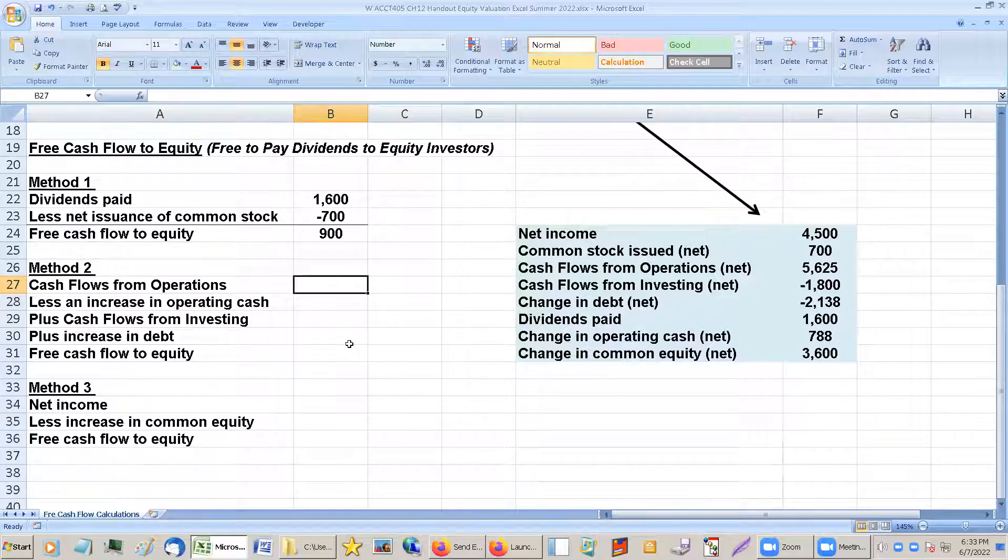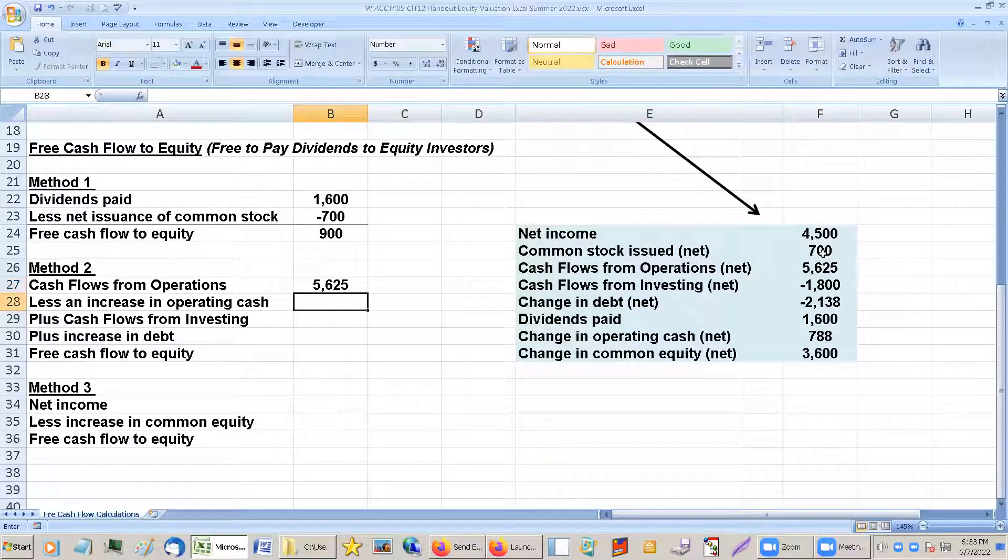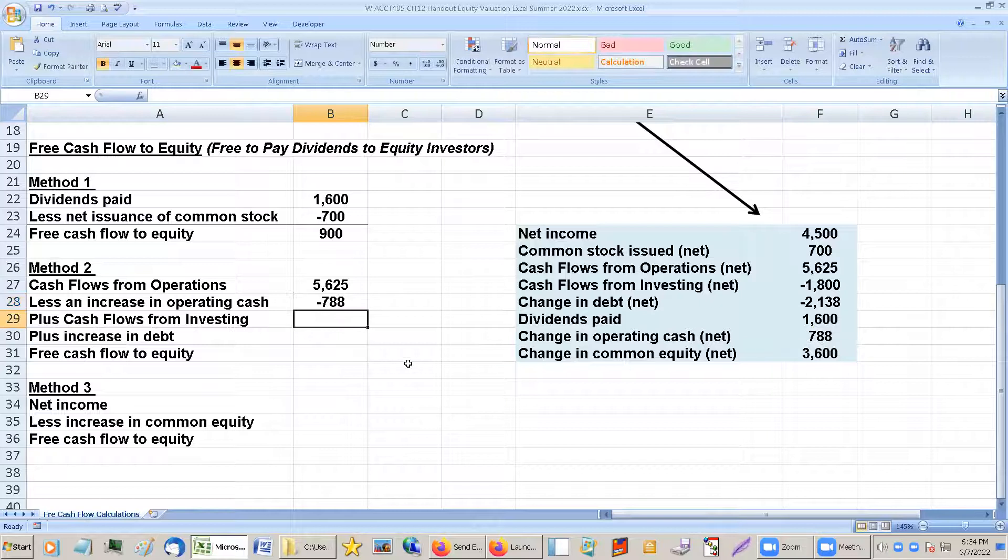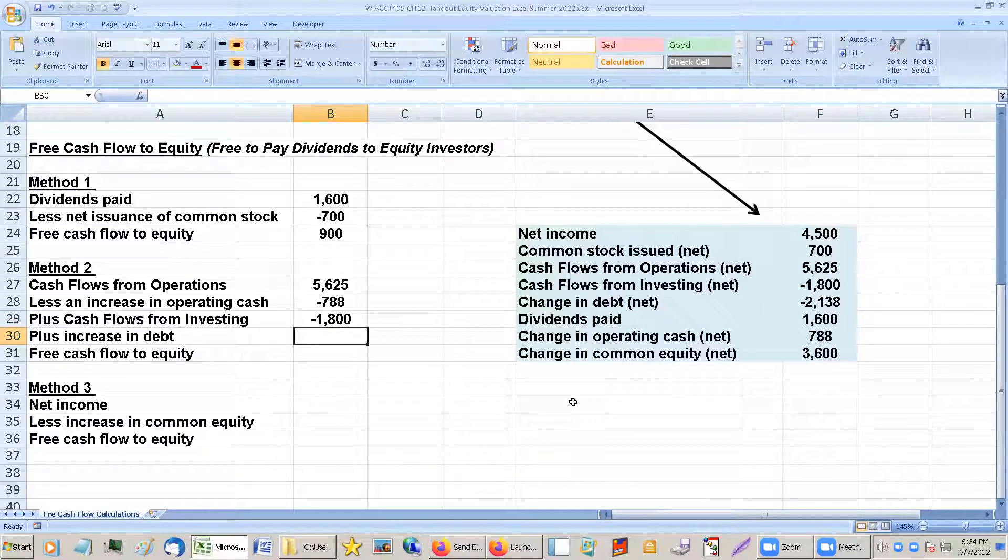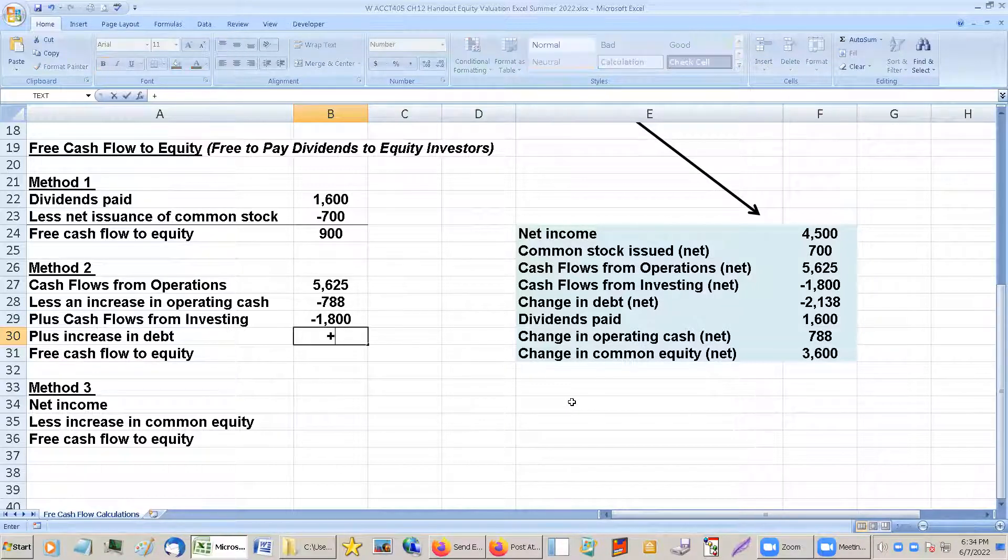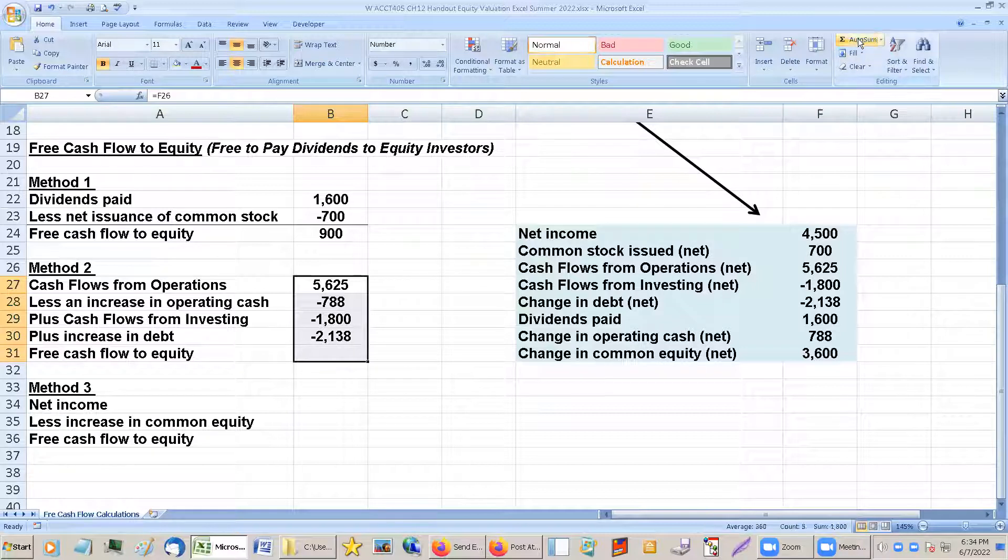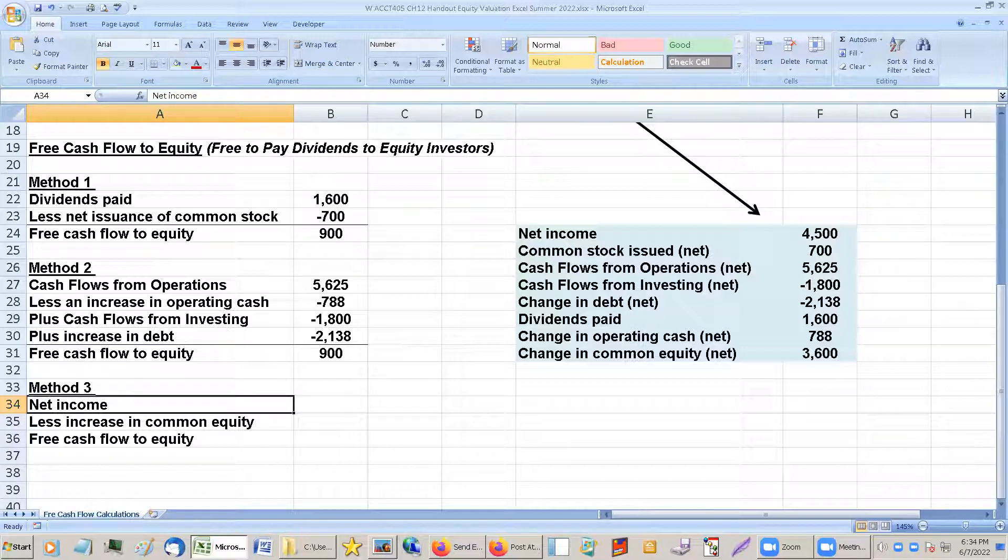Okay, method two is kind of a convoluted one, but this is the one that a lot of times you'll see. There's also a simpler form of it that I'll show you maybe at the end here. Okay, cash flows from operations, plus increase in operating cash, I guess it's cash by the way. Plus cash from investing. Investing cash is usually negative because usually you buy equipment more. You pay more for equipment than you sell it for. Plus an increase in debt. This is actually going to be a decrease in debt. And there we go, $900.